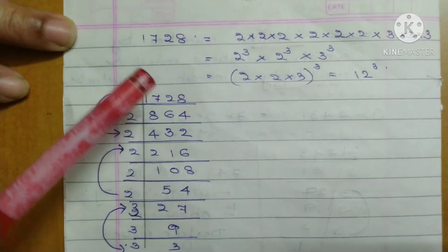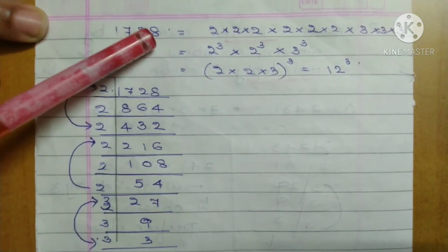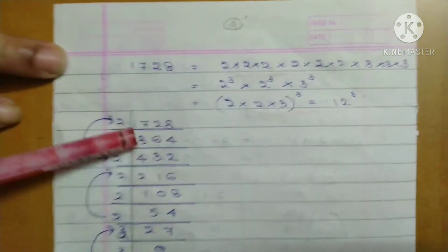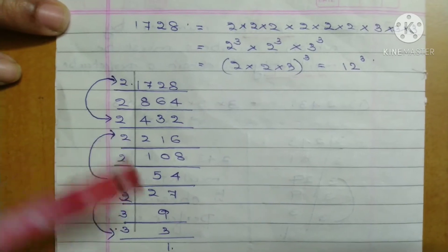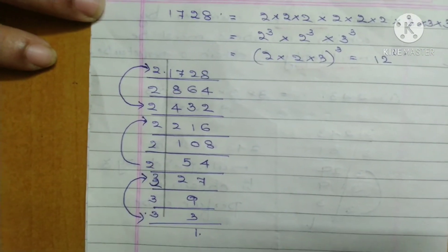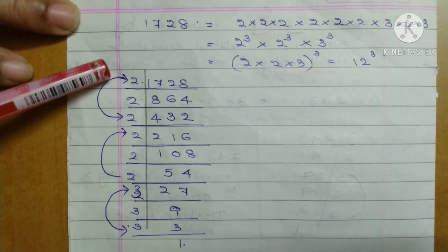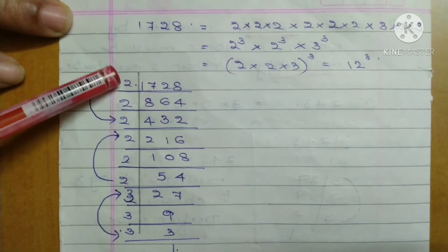Now here it is given 1728. How to find out the cube root? Prime factorization is studied in smaller classes. The smallest prime number is 2, then 3, then 5, 7, and so on. Here we have an even number, so we start by dividing 1728 by 2.